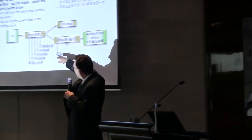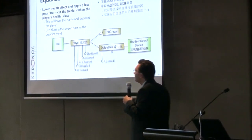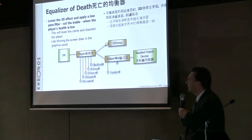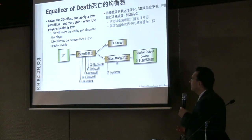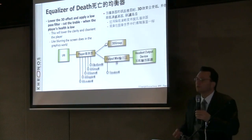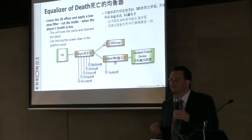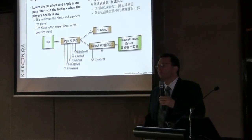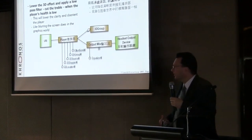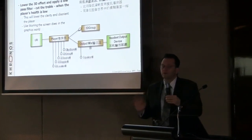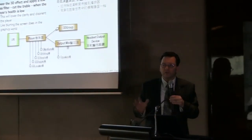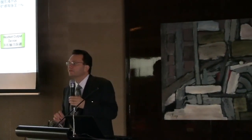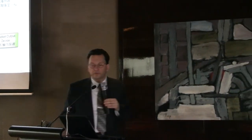These are the interfaces: the 3D group, the source, the Doppler, and the location interfaces. They allow you to control how much 3D you're putting into the system. By reducing the 3D and using the equalizer to cut the treble, you can give that disorientation effect to the user.